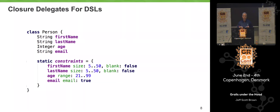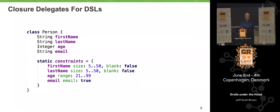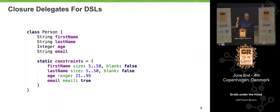If you define a method called 'methodMissing' in a class — it returns Object, accepts a String and an array of Objects — then you can create an instance of that class, invoke any method at all, make up a method name, and instead of getting a MissingMethodException, that methodMissing method will be invoked. Groovy will pass in arguments telling methodMissing what method name you invoked and what arguments you passed. So if we wrote a class with a methodMissing method and set that as the delegate of the constraints closure, the call to 'firstName' would actually invoke methodMissing on that delegate.